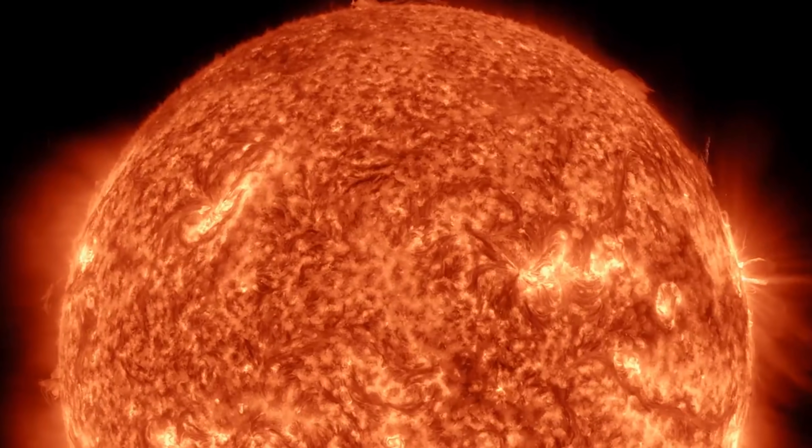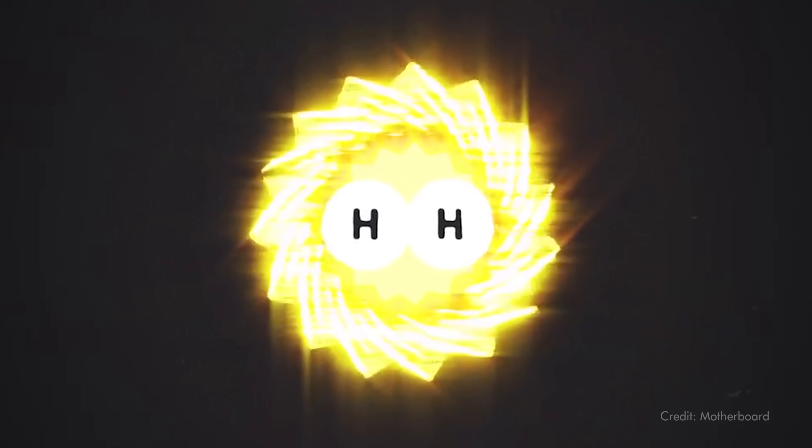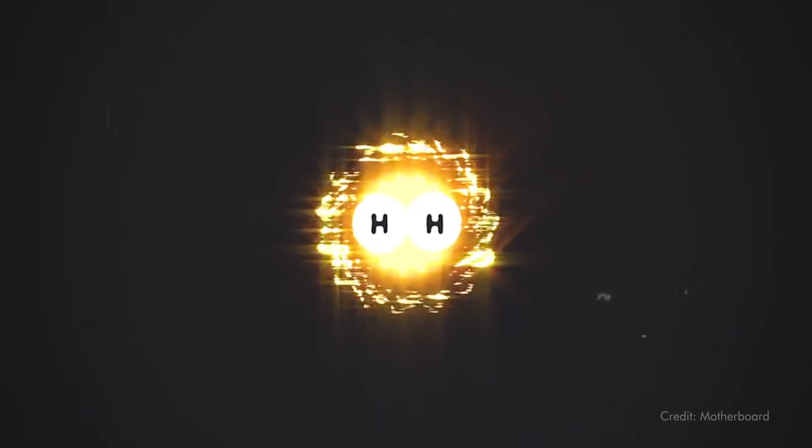Now when the Sun makes light, it uses a process called fusion where you take two light atoms and smash them together until they stick together. This releases a huge amount of energy. It's what powers the Sun and what makes it so bright.